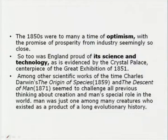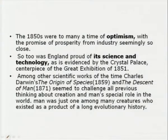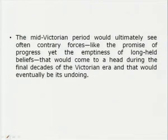The literature of this time period often focused on the plight of the poor and the new urban reality of industrial England. It was not pastoral as in the Romantic era or Renaissance; it concentrated on the urban reality, the realism of urban England — the two Englands of the wealthy and the poor. In the 1850s, there was optimism on the surface, as industry seemed to promise prosperity. England was proud of its science and technology, evidenced by the Crystal Palace, centrepiece of the Great Exhibition of 1851. Charles Darwin's Origin of Species and Descent of Man challenged all previous thinking about creation and man's special role in the world — man was just one among many creatures, a product of a long evolutionary history.